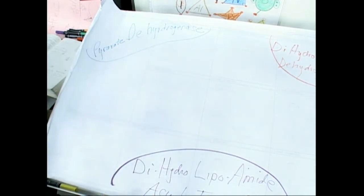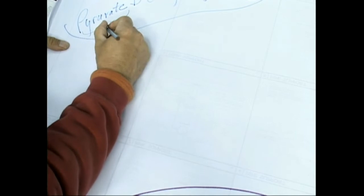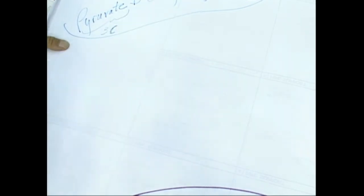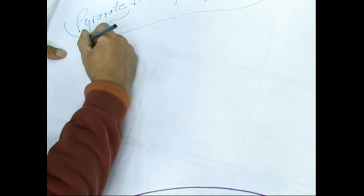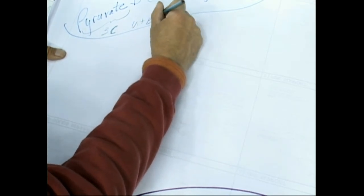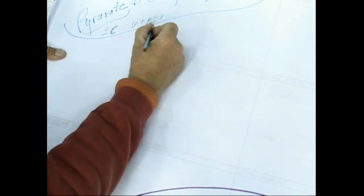So where to start on this? If you remember the pyruvate, pyruvate is three carbons. So essentially what happens is, vitamin BS1, you remember that? That has the sulfur in it.